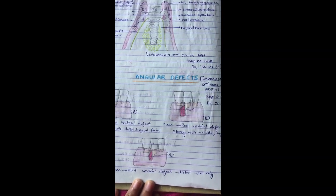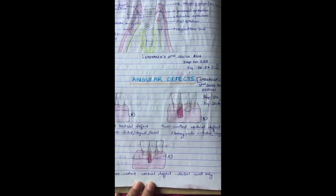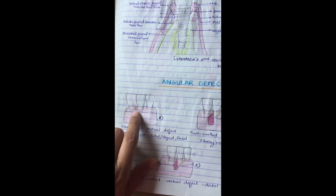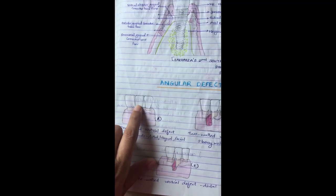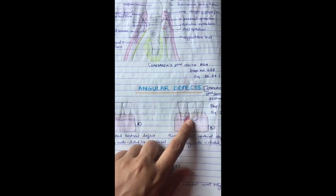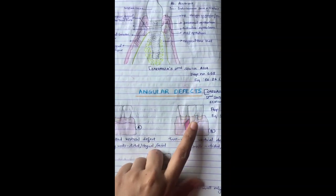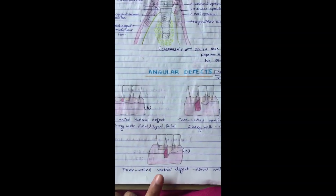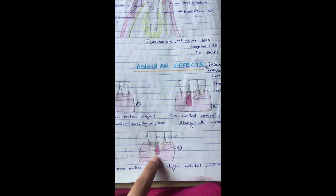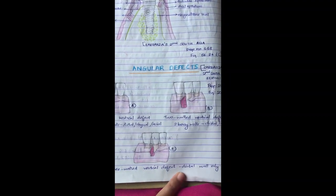Next are the angular defects — the different types of angular defects, on page number 216. A one-wall defect means one wall around one side of the tooth is missing. A two-wall defect means two walls around the tooth are missing while the other walls are intact. A three-wall vertical defect means the back wall, a side wall, and the front wall are all missing.